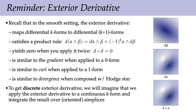To get a discrete exterior derivative, we imagine applying the ordinary continuous exterior derivative to a continuous k-form and then integrating the result over our oriented simplices. This turns out to give a very simple expression. Let's see how this works.